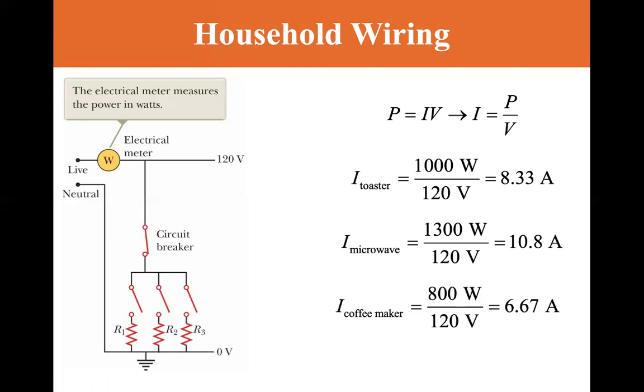Let's say you also have a coffee maker that's 800 watts divided by 120 volts, which is 6.67 amps. If you had all three going at once on the same circuit breaker - a 20 amp circuit breaker - you're going to get 25.8 amps and you're going to blow the circuit breaker.